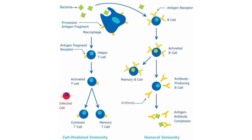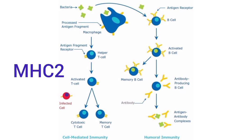MHC molecules in humans are divided into two types. Class 1 MHC molecules are found on every cell in the human body and are specifically responsible for presentation of endogenous antigens to cytotoxic T cells. Class 2 MHC molecules are found on B cells, macrophages, and other antigen-presenting cells, and are responsible for presenting exogenous antigens to helper T cells. Antigen-presenting cells present their class 2 MHC molecules together with antigen-bound HLA to the helper T cells.